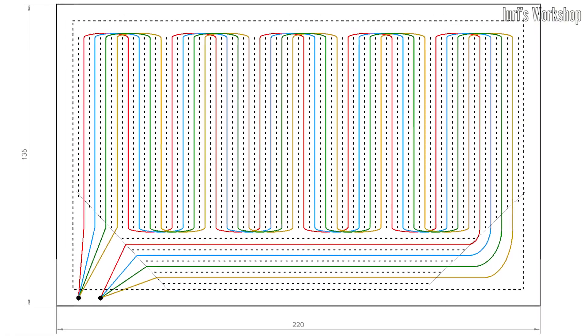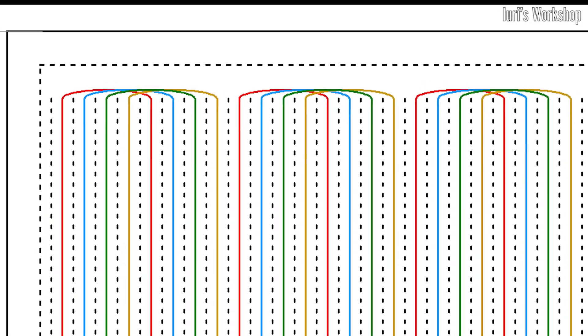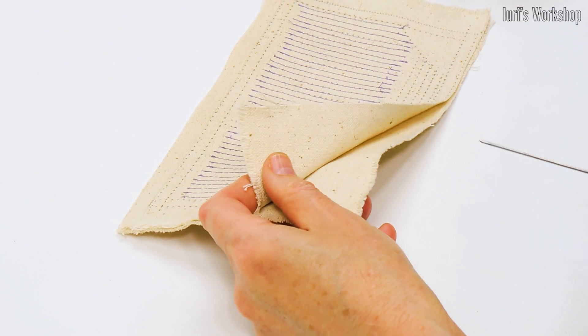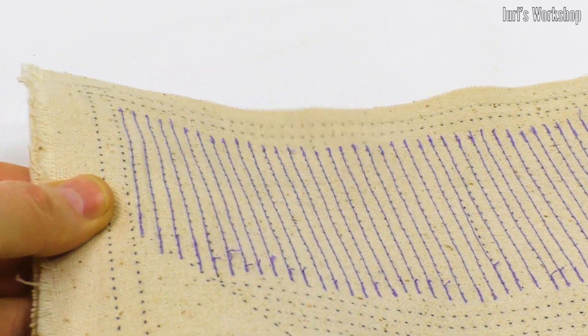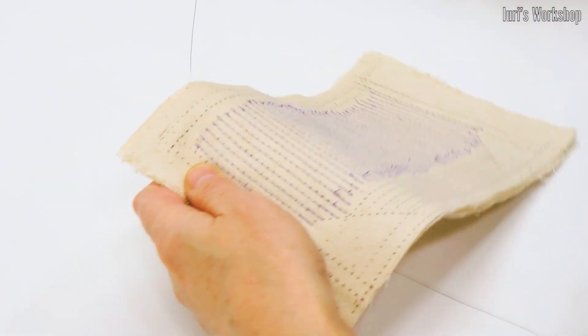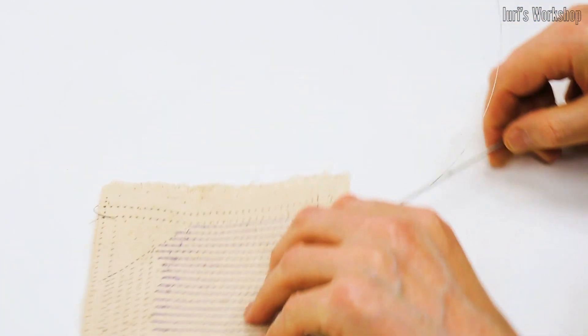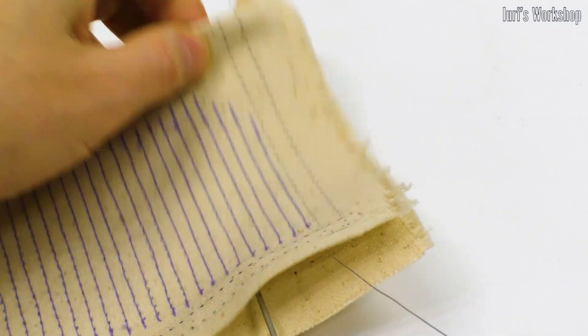The resistance of 4 wires connected in parallel is equal to 2.7 ohms. The power of the heater, at a voltage of 5 volts and a current of 1.9 amperes, is 9 watts. These parameters allow you to connect the heating pad to the USB interface 3.